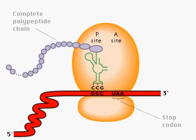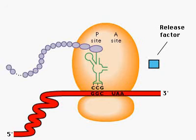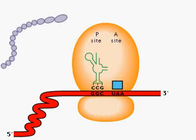Translation termination is triggered by a stop codon in the mRNA. Stop codons are recognized by release factors, which help release the fully synthesized polypeptide chain from the ribosome.